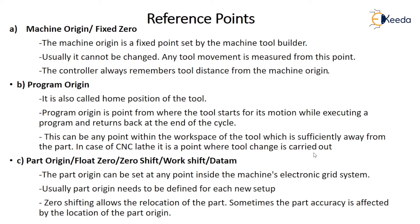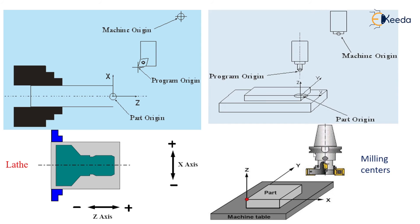Part origin — also called float origin, zero shift, work shift, or datum — can be set at any point inside the machine's electronic grid system. Usually, part origin needs to be defined for each new setup, because it defines the position with respect to parts where machining actually starts. Zero shifting allows relocation of the part, and sometimes part accuracy is affected by the location of the part origin.